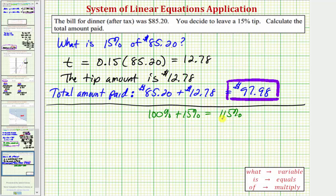So we'll end up paying 115 percent of the bill amount of 85 dollars and 20 cents. So to answer this question in one step rather than two, we could pose the question, what is 115 percent of 85 dollars and 20 cents?